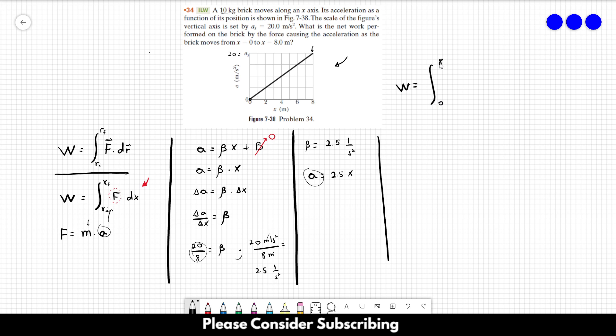So this is going to be 2.5x squared over 2 from 0 to 8, and this is going to be 2.5 times 8 squared over 2. Oh, we forgot the mass, right? We have to add the mass over here, so there is a 10 over here. And this is 25 times 64 over 2, and this gives us 800 joules, and that's the answer of this problem.